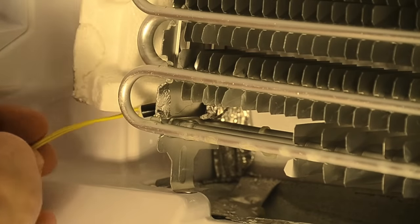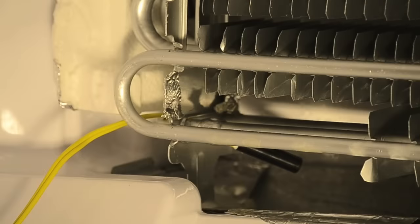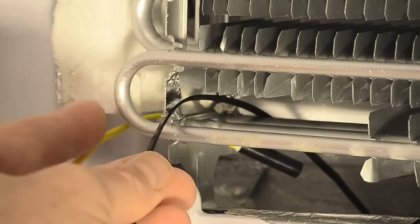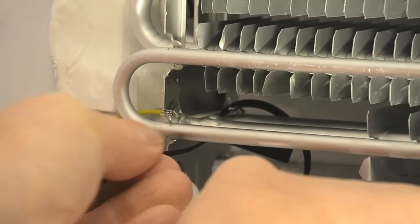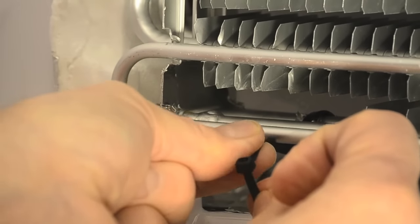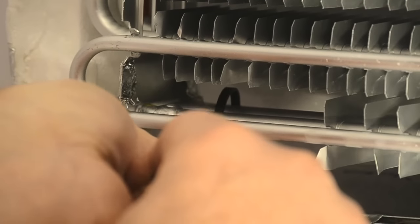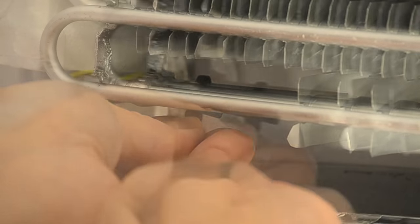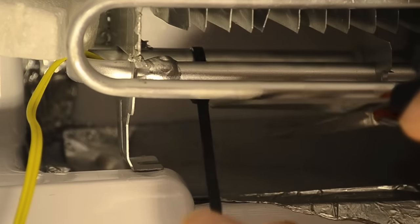Place the new defrost sensor where the old one was. Use a long zip tie to secure it to the coil. You'll need a long zip tie to be able to reach it in the tight spaces, especially underneath the evaporator unit. Snip off the excess. Don't worry about securing it with a second zip tie. It's in a very difficult spot to reach and one should hold the sensor just fine.